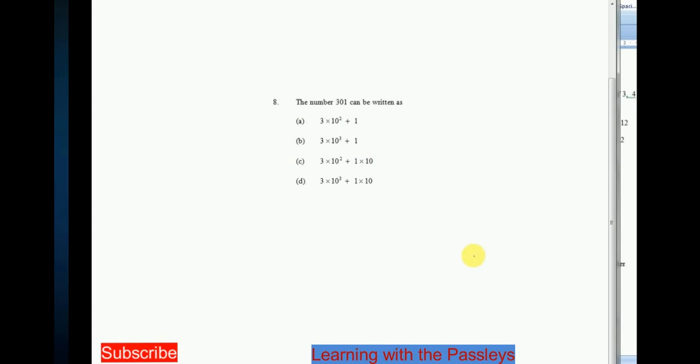Let us do this one. The number 301 can be written as. What I'm going to do here is to work out A, the choice A. Because I want to find out if when I work out A, I am going to get the same number here. So let us work out A. So 3 in bracket, we have 10 times 10. So we are basically squaring this 10 here. 10 square is basically 10 times 10 plus 1.